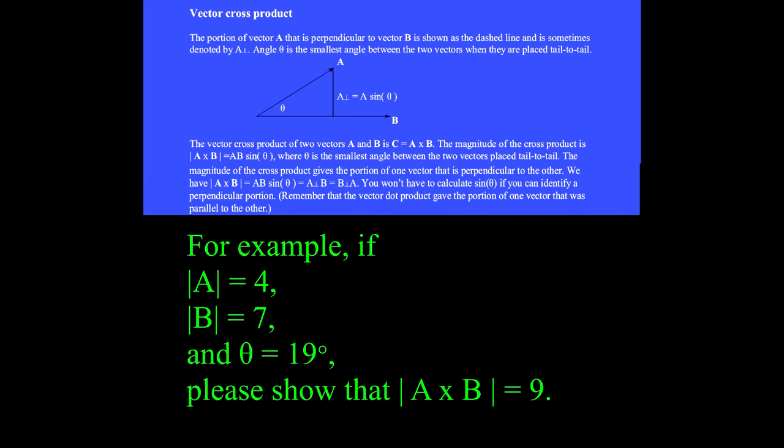For example, if the magnitude of A is 4, the magnitude of B is 7, and theta is 19 degrees, please show that the magnitude of the cross product is 9.